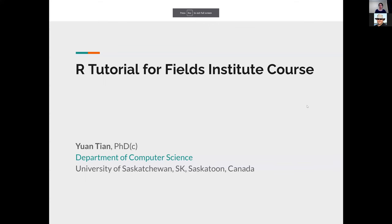So I talked about data structures in R. We learned two very important data structures: one is vector, which is a column of values in the same data type — could be numeric, character, or boolean. We also learned data frames, which is more like multiple vectors concatenated together as columns. I also briefly mentioned other data types like list or matrix, but we'll focus on vector and data frame.